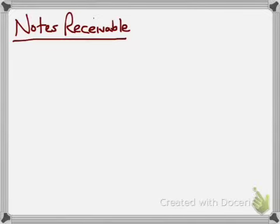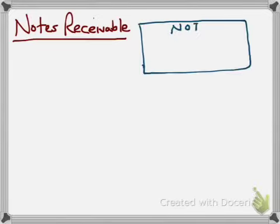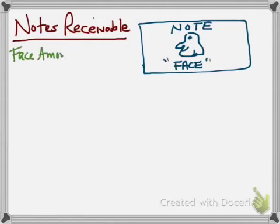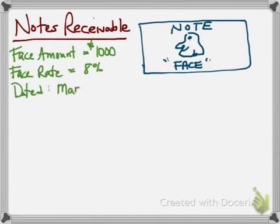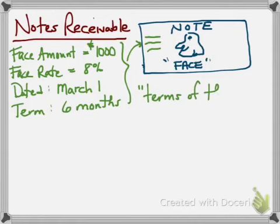Let's look at accounting for notes receivable. A note is more formal than an account receivable — the face of the note is like a legal contract. It requires a signing and specifies the following information: the face amount, $1,000; the rate on the face, or face rate, 8%; a date, March 1st; and terms on the note, 6 months, which is the term to maturity.